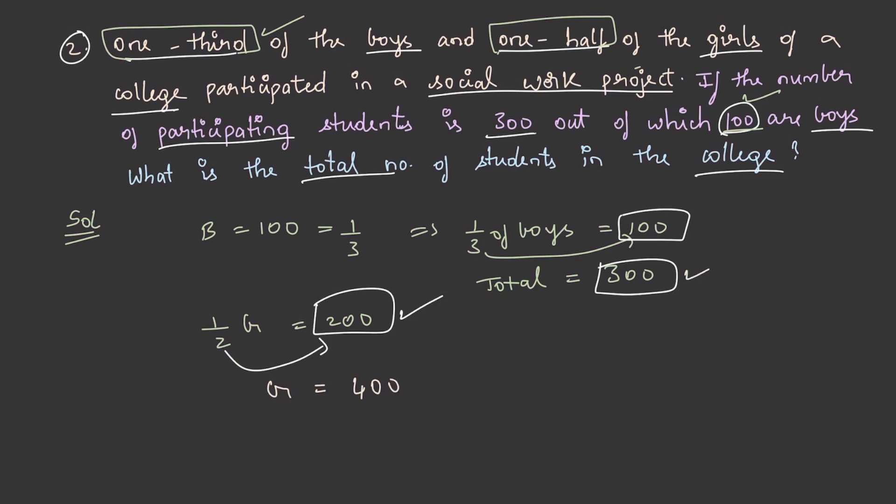The total number of boys are 300 and the total number of girls are 400. Now, how to find the total number of students in the college? By adding the boys and girls strength. On adding boys plus girls, we get 300 plus 400, which gives us the total strength of students. So the final answer is 700.